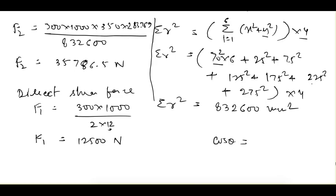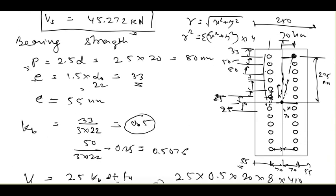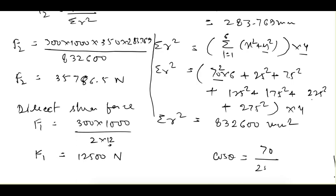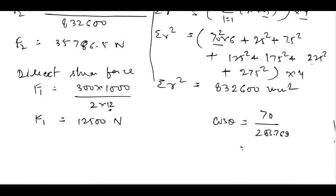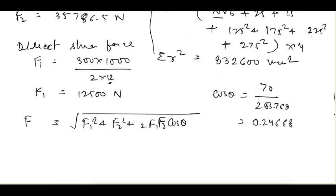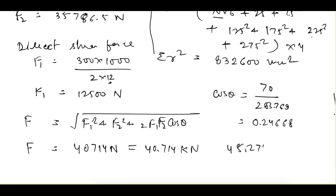cos θ is the angle at the extreme bolt: cos θ = 70 / 283.769 = 0.24668. Putting all values into the resultant formula: F = √(F₁² + F₂² + 2·F₁·F₂·cos θ), we get F = 40,714 N = 40.714 kN.